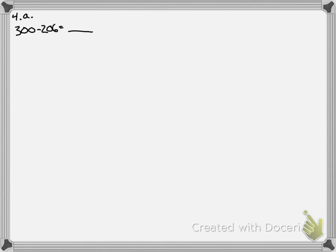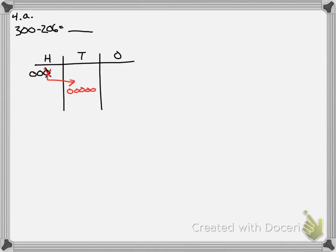This problem asks us to find missing numbers to make each statement true and show our strategy. It doesn't tell us how to solve it, so we can use a chip model, arrow way, or anything we want — choose whatever is easiest. For the first one, 300 minus 206: I unbundle two hundreds — moving all ten-tens from each — then take away 6 in the ones, leaving 4. Nothing to subtract in the tens, leaving 9. Subtract 2 hundreds, leaving 0. I get 094.